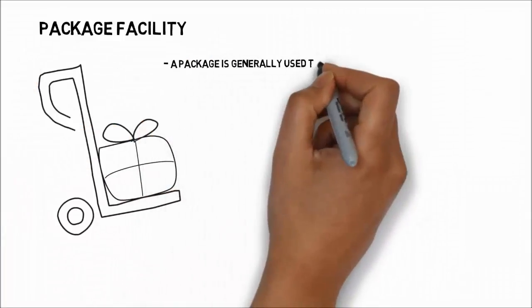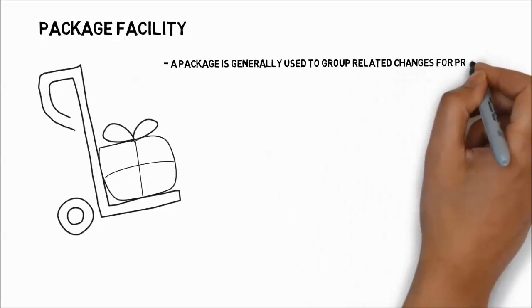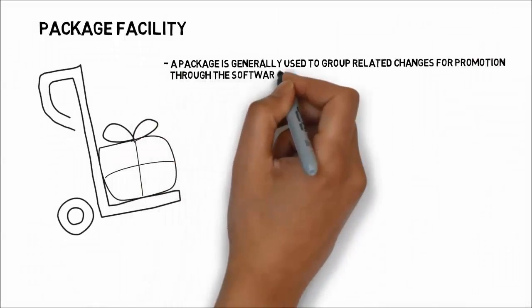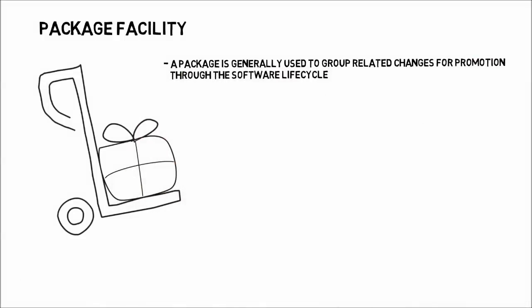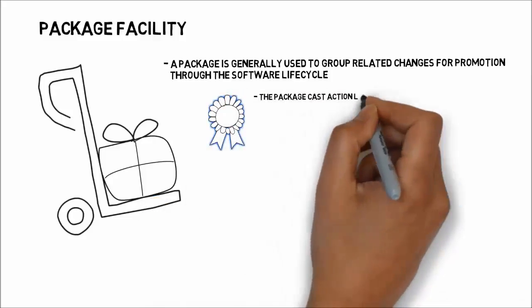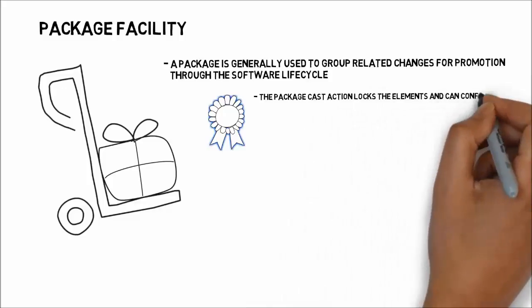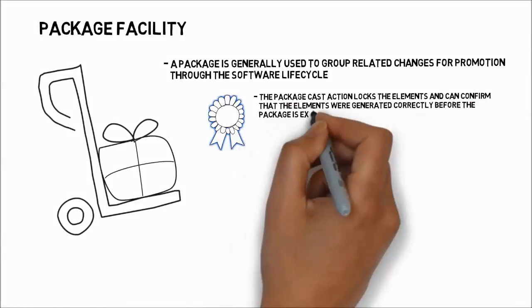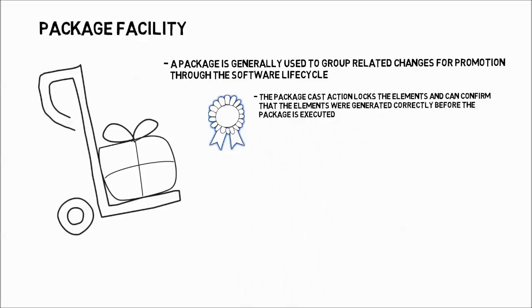A package is generally used to group related changes for promotion through the software lifecycle. The package facility provides several key benefits. The package cast action can validate the package contents before further processing. After a user creates a package, the next step is to cast it. The cast action locks the elements to prevent other changes, can confirm that the elements were generated correctly, that no synchronization errors are detected, and that all components exist and are valid before the package can leave the cast state.